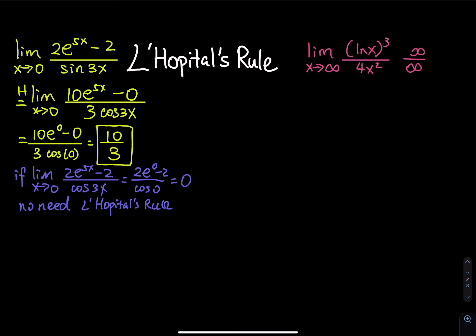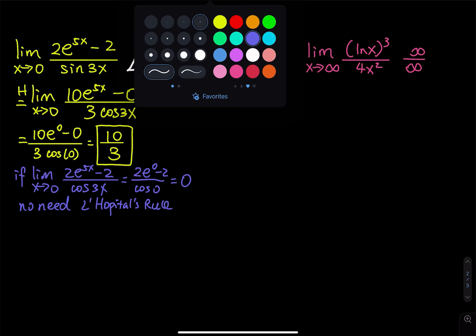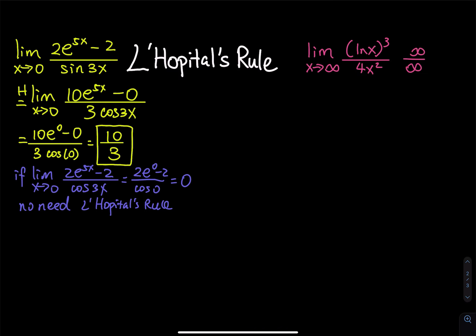The next function is the limit as x goes to infinity of ln(x) to the third divided by 4x squared. When you plug in infinity, you have infinity over infinity, which is an indeterminate form. We apply L'Hôpital's rule, and for this problem we have to apply it three times to get out of the indeterminate form.